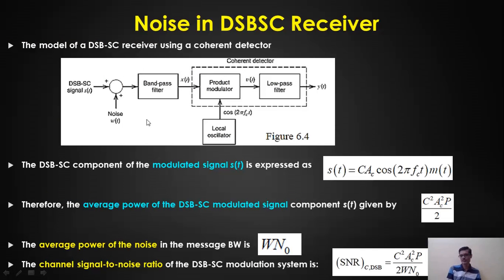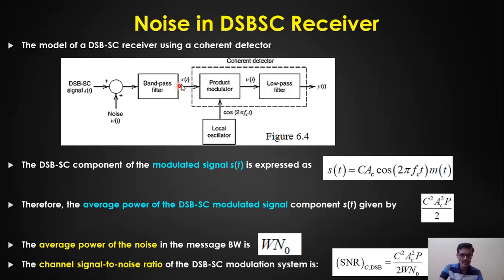Now for the first case: deriving the figure of merit for a DSB-SC receiver using coherent detection. The model has an adder where AWGN is added, followed by a bandpass filter centered at fc, then a coherent detector. The demodulator input is x(t), and the output of the product modulator is v(t). After passing through a low-pass filter, we estimate the message signal m(t), but noise also affects this output.